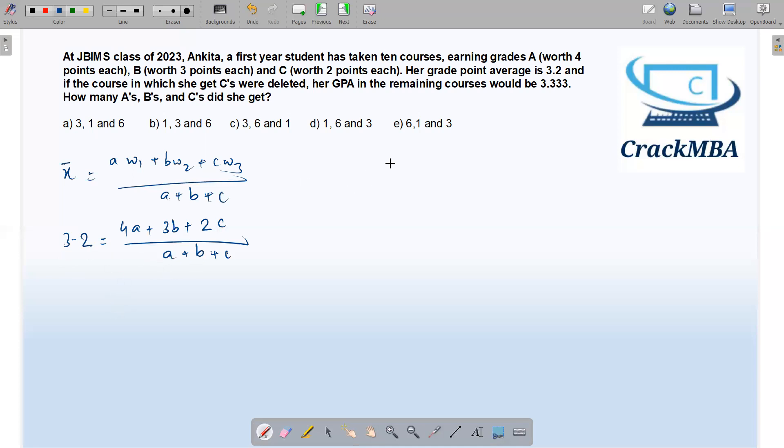In this other equation, we have to delete c, so we'll have 4a plus 3b divided by a plus b, and that's equal to 3.33. So we have to solve these two equations to find the values of a, b, c, and that will be the answer.